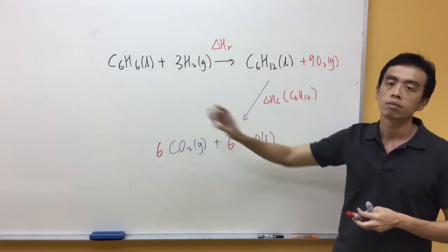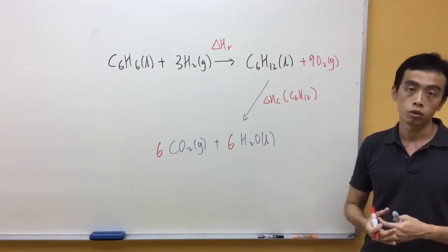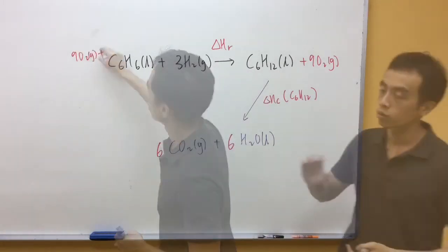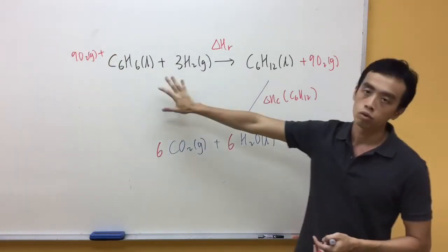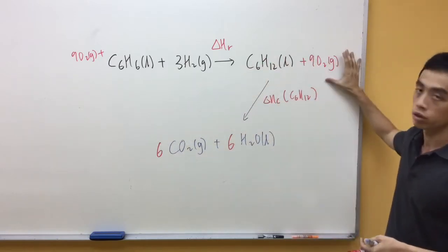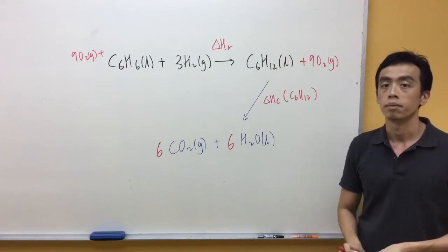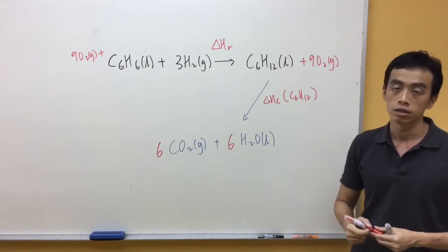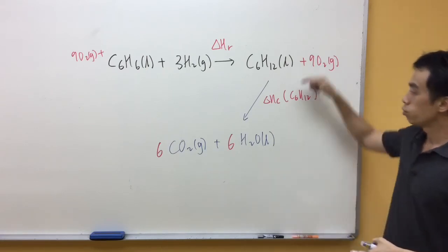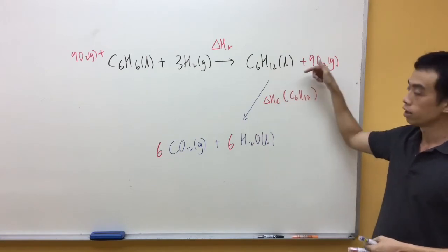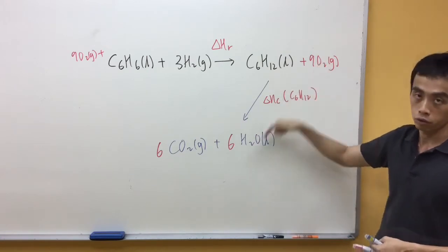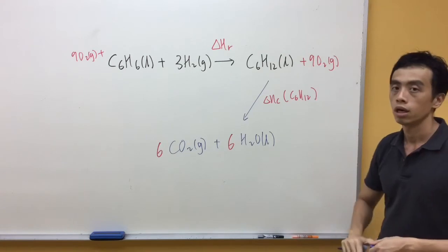So once I add 9O2 on the left-hand side and 9O2 on the right-hand side, then this equation is balanced. So there's only for me to balance this energy cycle any further. So we already have accounted for this arrow. We have two more combustions to consider.